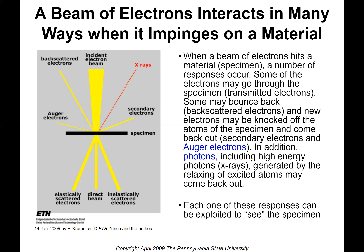Some of the electrons may go through the specimen — those are called transmitted electrons. Some may bounce back and are called backscattered electrons or Auger electrons. New electrons may be knocked off the atom or specimen and come back out; those are secondary electrons and also Auger electrons. In addition, photons including high-energy photons or x-rays are generated by the relaxing of excited atoms. Chemistry students will learn in this unit that electrons on an atom can become excited, and when they drop down to the ground state, they emit energy as high-energy photons, which can give us additional information.